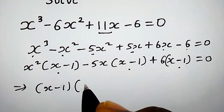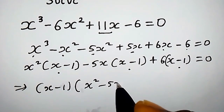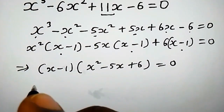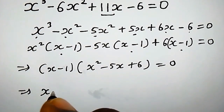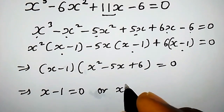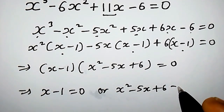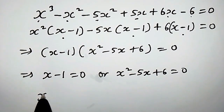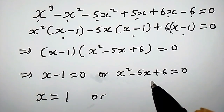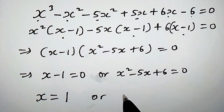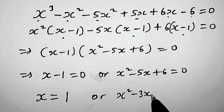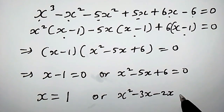This implies we have x minus 1 as a common factor throughout, giving x minus 1 times x squared minus 5x plus 6 equals 0. So this means x minus 1 equals 0, or x squared minus 5x plus 6 equals 0. The first solution is x equals 1. The quadratic can be factorized: x squared minus 3x minus 2x plus 6.